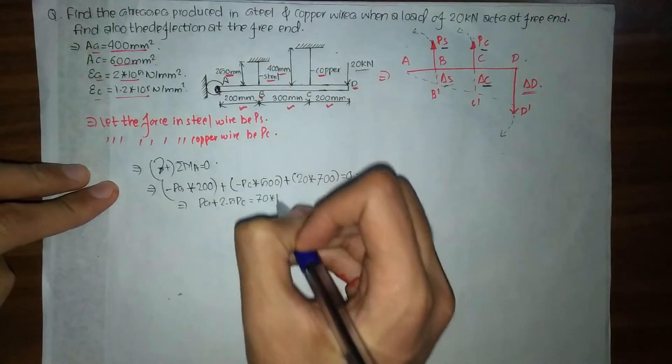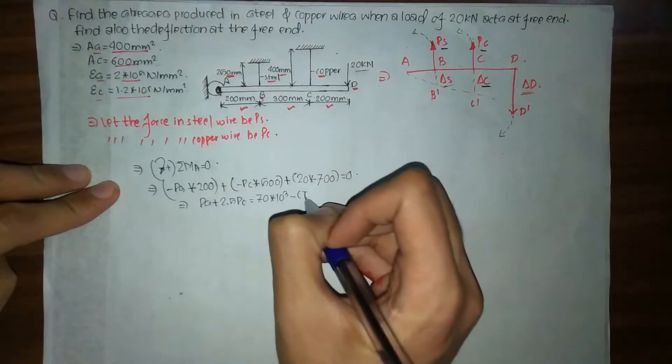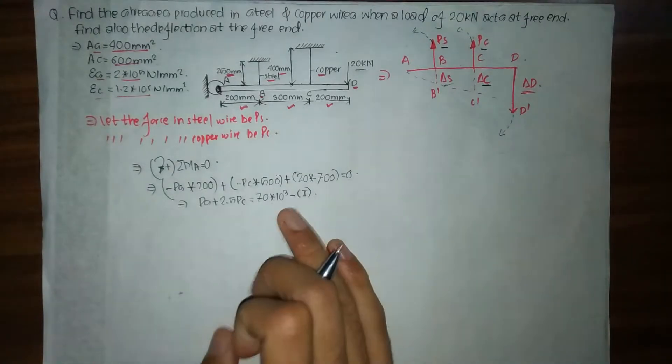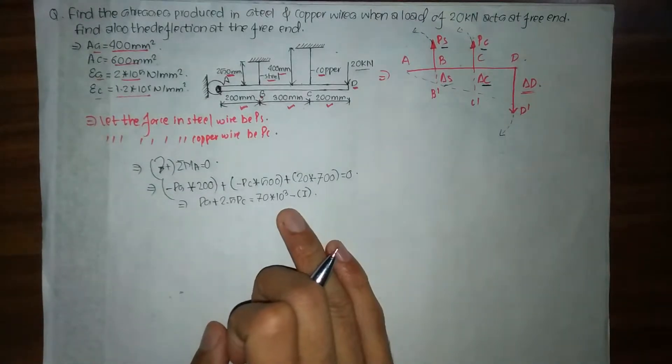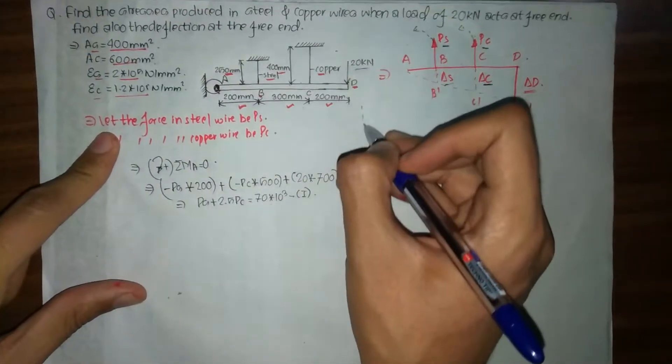On solving this equilibrium equation we get: P_S + 2.5·P_C = 17×10³. We will name this Equation 1.